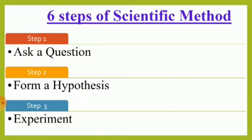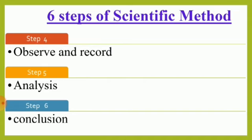There are six steps involved in the scientific method. Step one: ask a question. Step two: form a hypothesis. Step three: experiment. Step four: observe and record. Step five: analysis. And step six: conclusion.